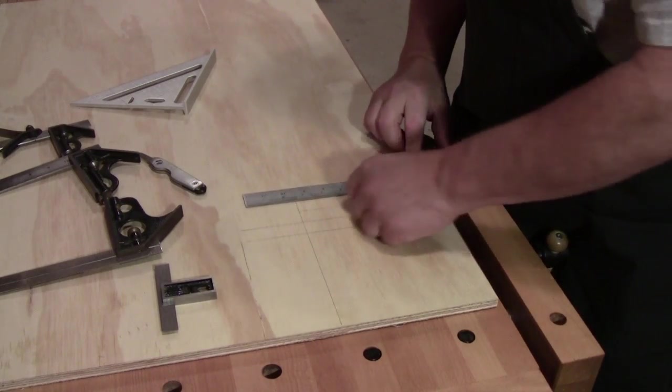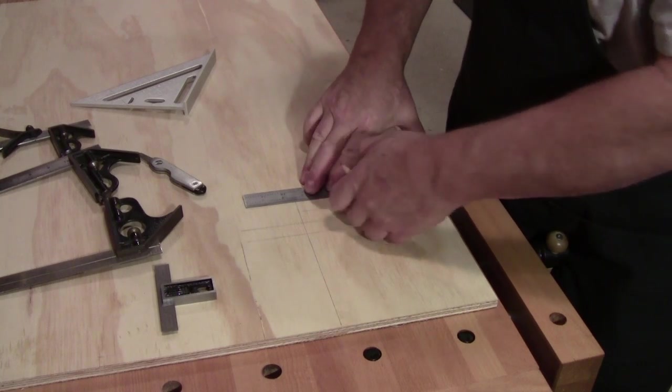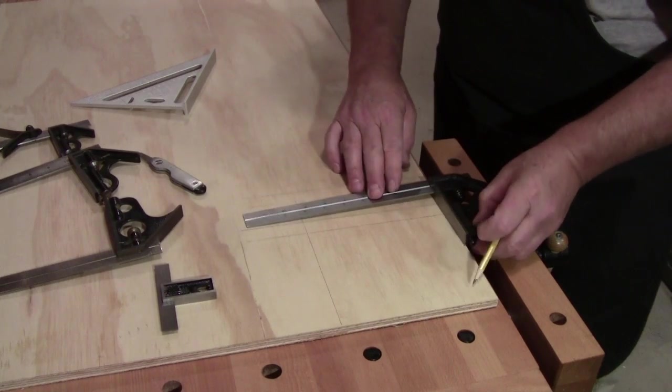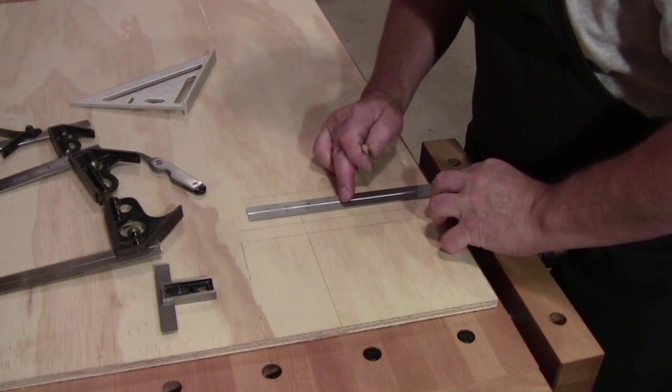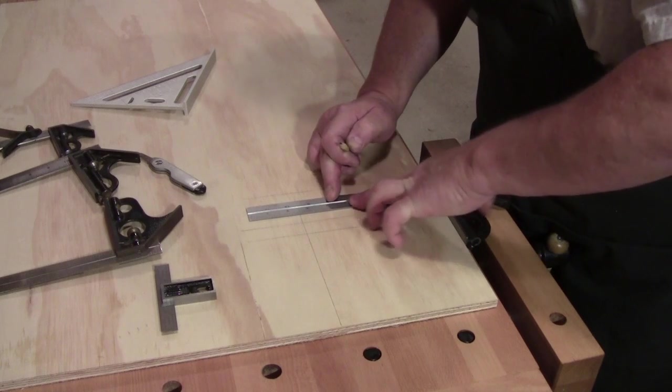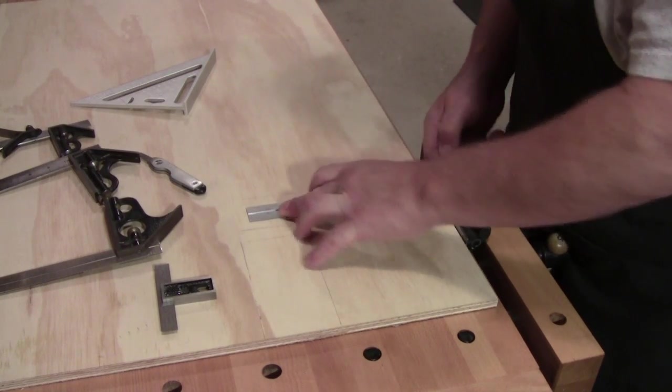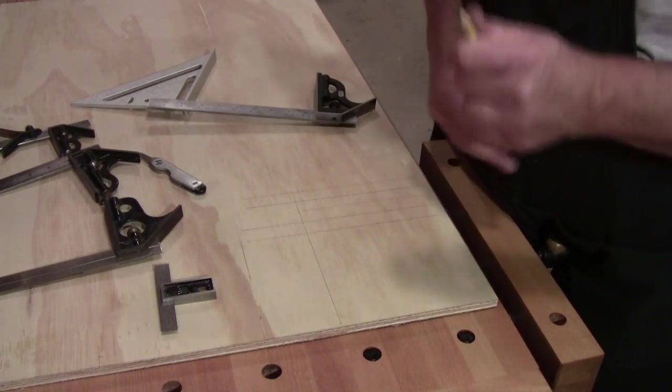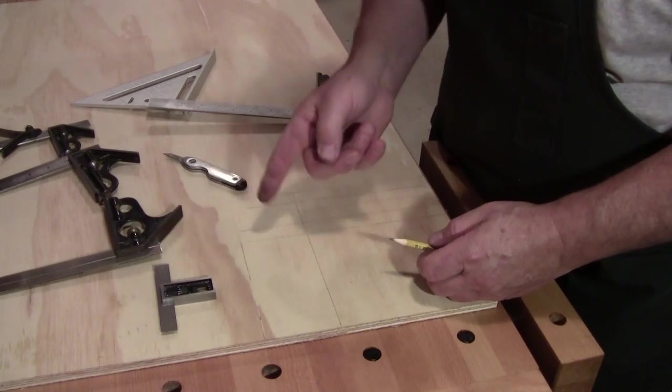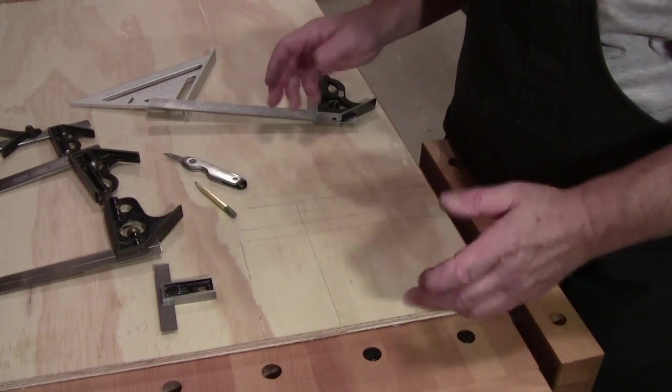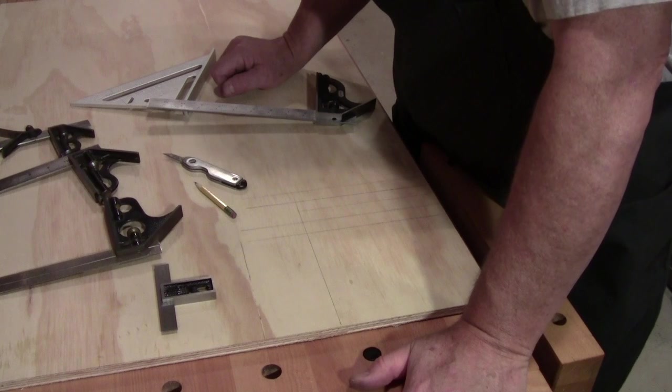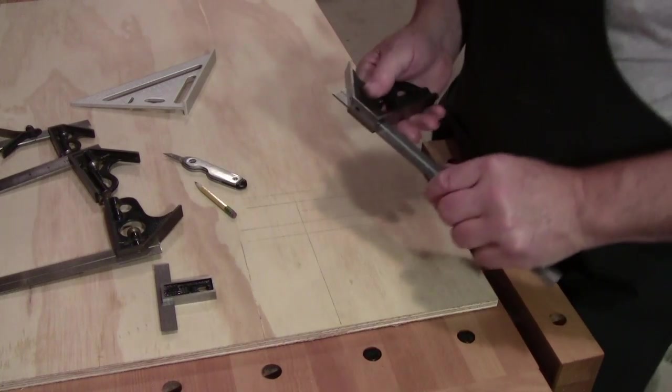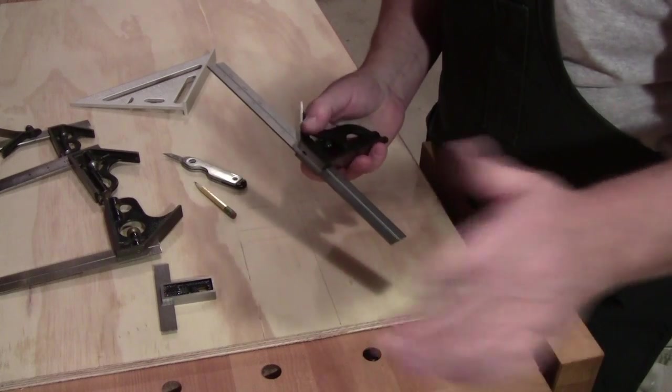So now you know how to check for square. You draw a line, you flip over and you draw a second line. The distance between those lines should match. Or if you're going to get really accurate and you use a knife, you should fall right in that same knife line. So what if your square is out ever so slightly? Well, there are ways to correct them. I'm not going to get into that because I don't want you messing up your tool.